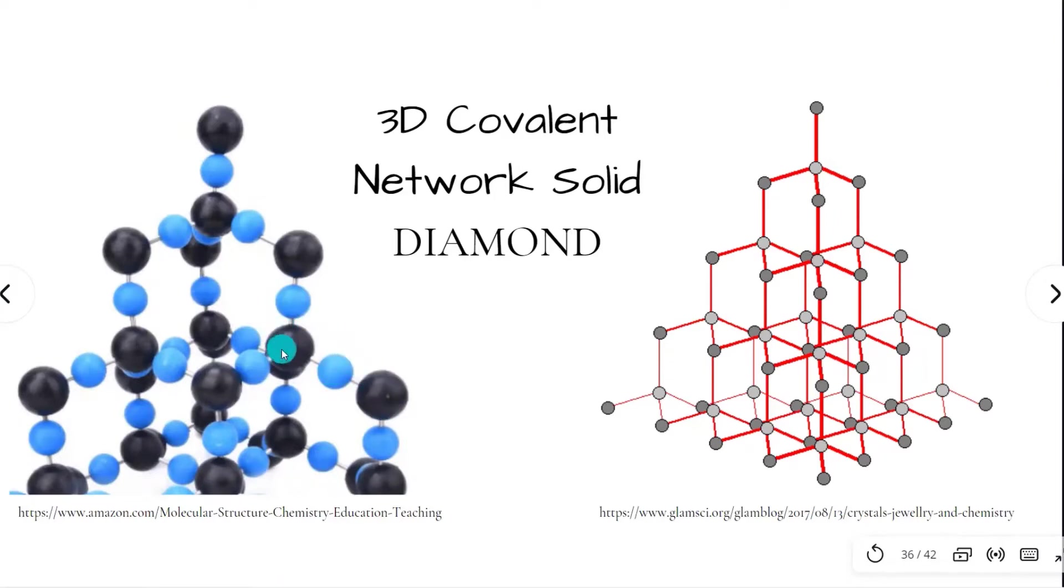Each silicon atom is bonded to four oxygen atoms, and each oxygen atom is bonded to two silicon atoms. Diamond is made up of carbon atoms, all covalently bonded to each other and extending in three directions. Each carbon is covalently bonded to four other carbons.